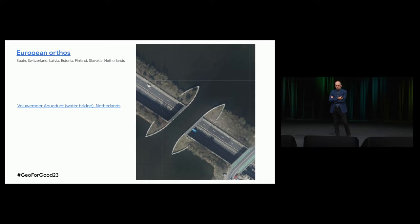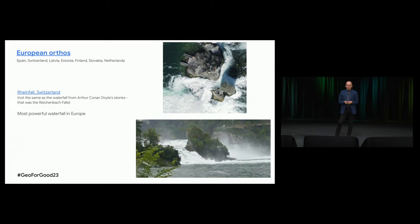We are happy to introduce European authority-rectified imagery, mostly aerial imagery from several countries. This is the famous water bridge in the Netherlands — it looks like a stitching problem but it's real: a water bridge on top with a normal roadway at the bottom, with ships sometimes photographed crossing above the highway. Another highlight is a waterfall in Switzerland — the most powerful waterfall in Europe. The resolution is pretty nice; you can see all the waves breaking around the rocks.